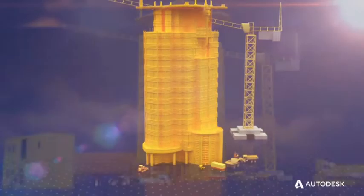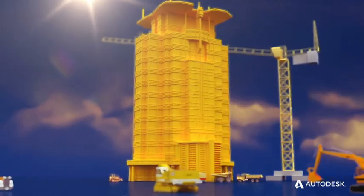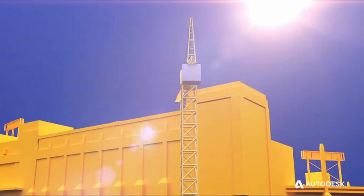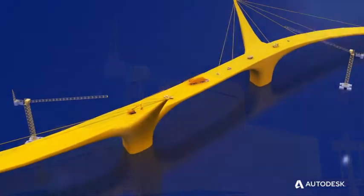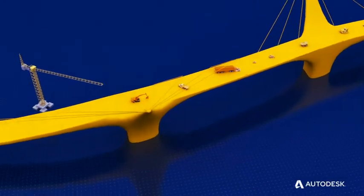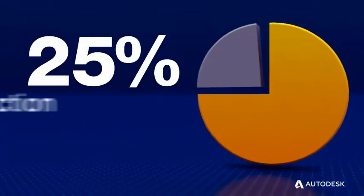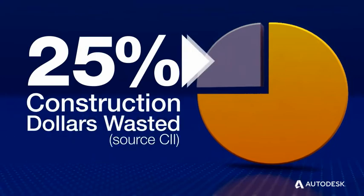There are many different types of construction, but from large to small, from civil to commercial, to process and energy, they all share one thing in common: they are executed in the field on the job site. But there is a big problem in construction. According to CII, over 25 cents of every dollar spent is wasted in the field.